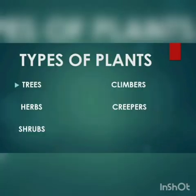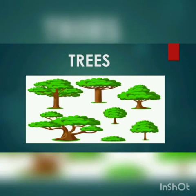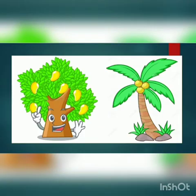Today we will learn about different types of plants. They are trees, herbs, shrubs, creepers and climbers. Number 1, trees. Trees are very big plants with hard and strong stems like mango tree and coconut tree.